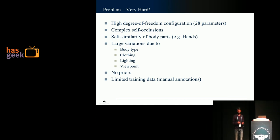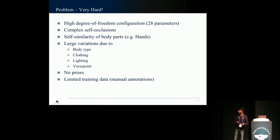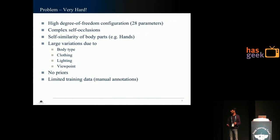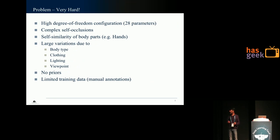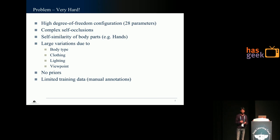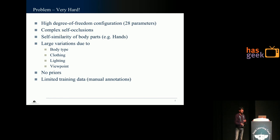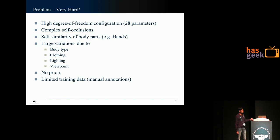The detector needs to be invariant yet discriminative to large variations due to body type, clothing, lighting, and viewpoint. Also, we do not assume any priors about the scale or position of the human in the image. And finally, due to limited training data — of all publicly available datasets, the largest one, the human pose dataset from Max Planck Institute, has only 40,000 labeled images.